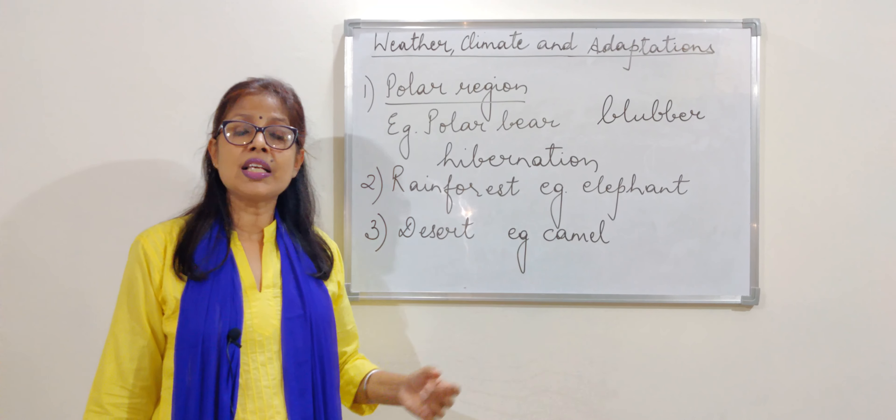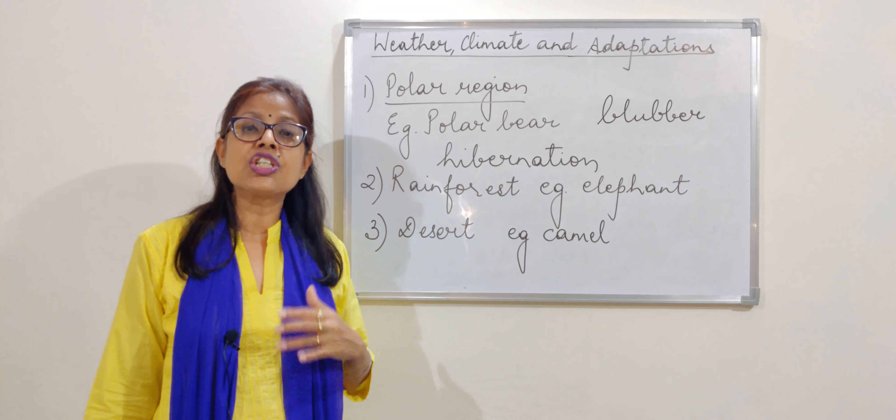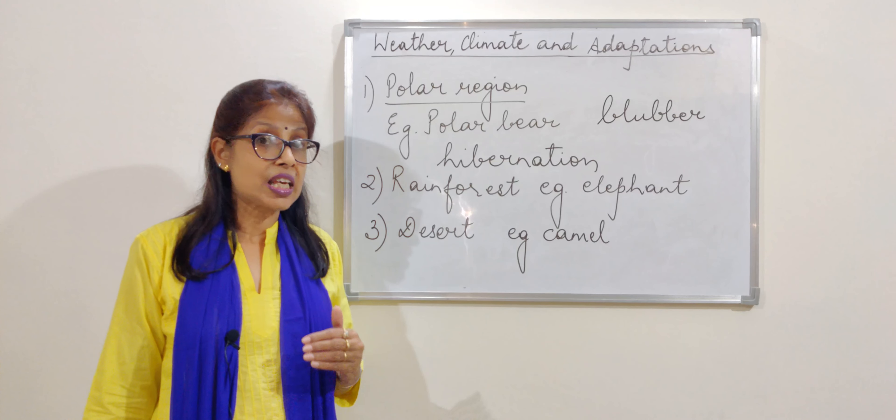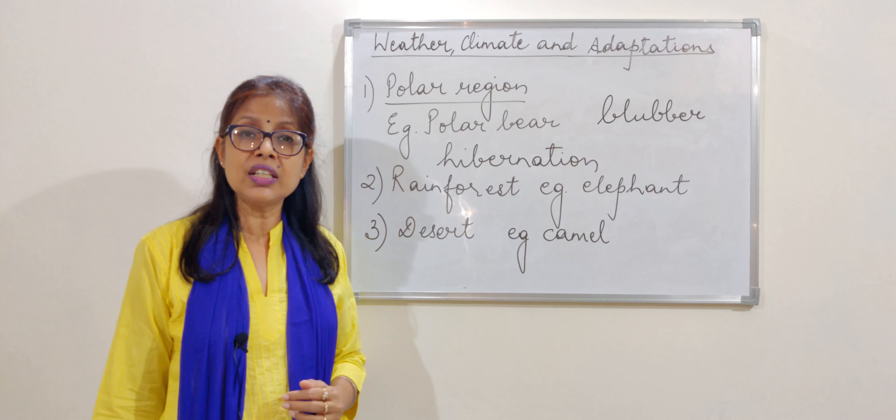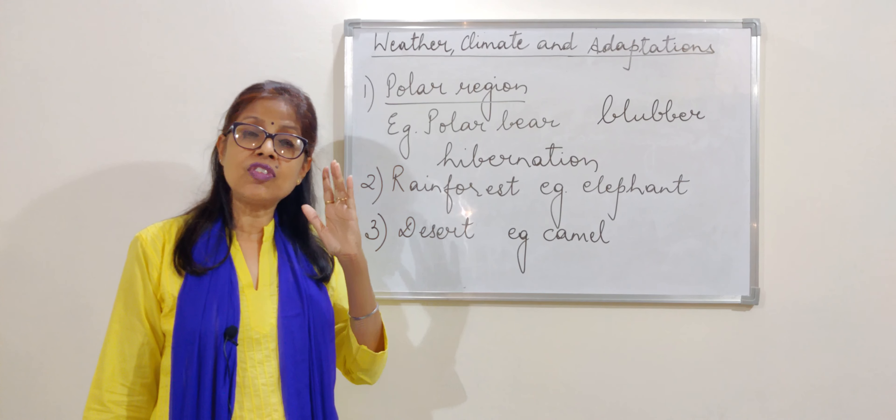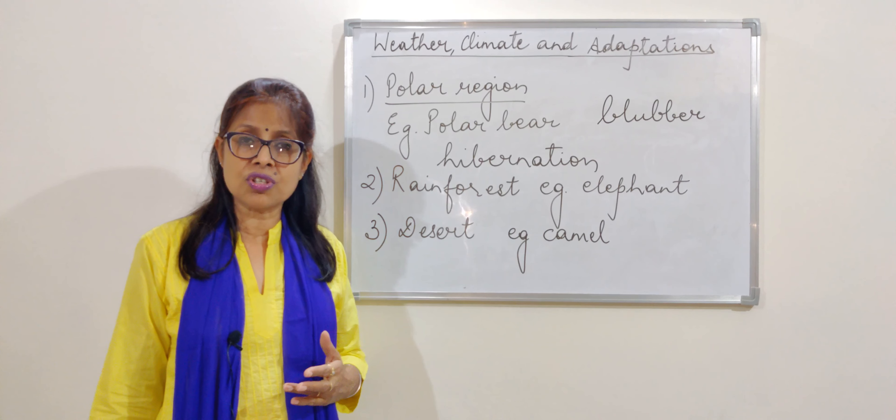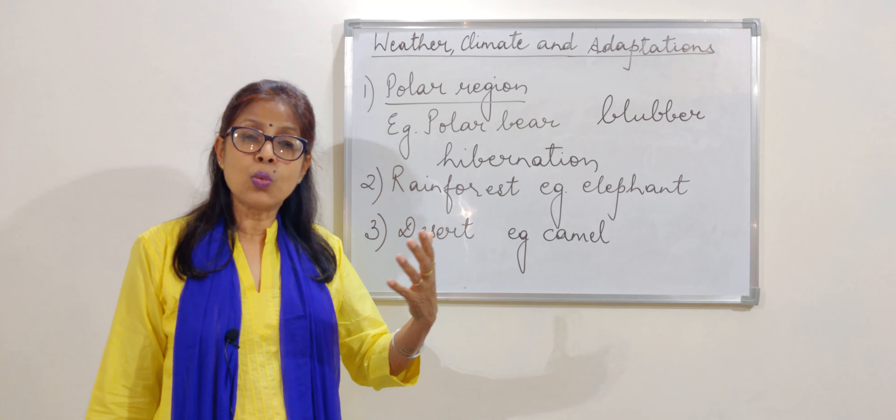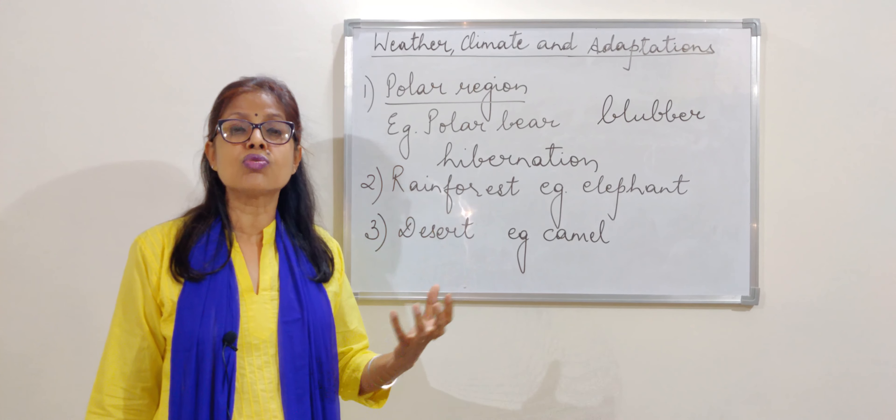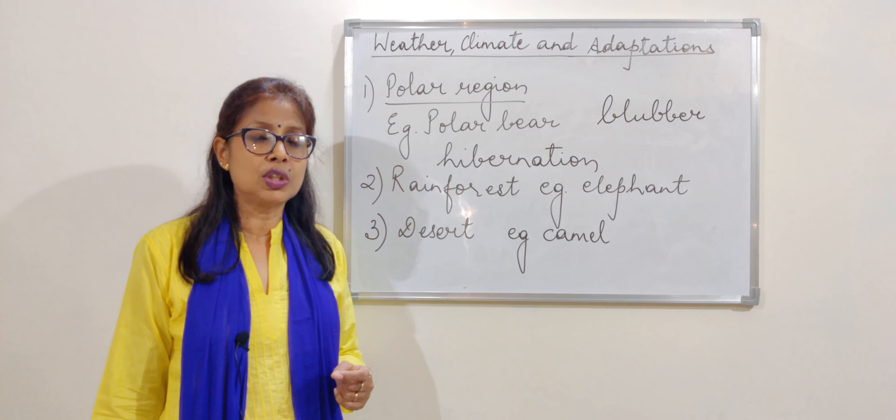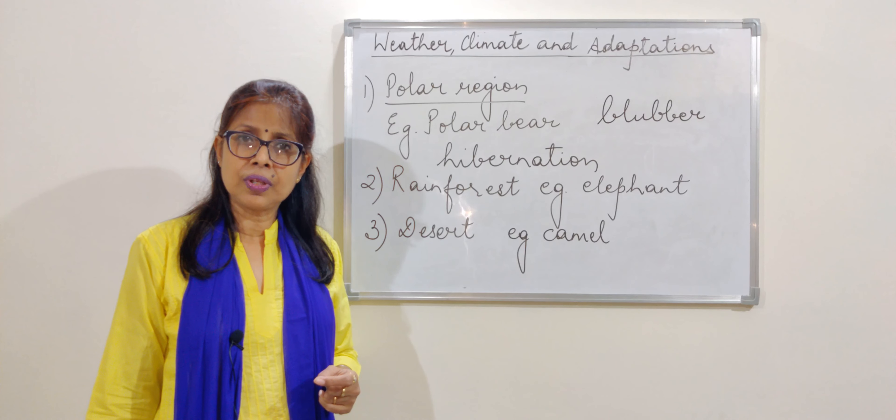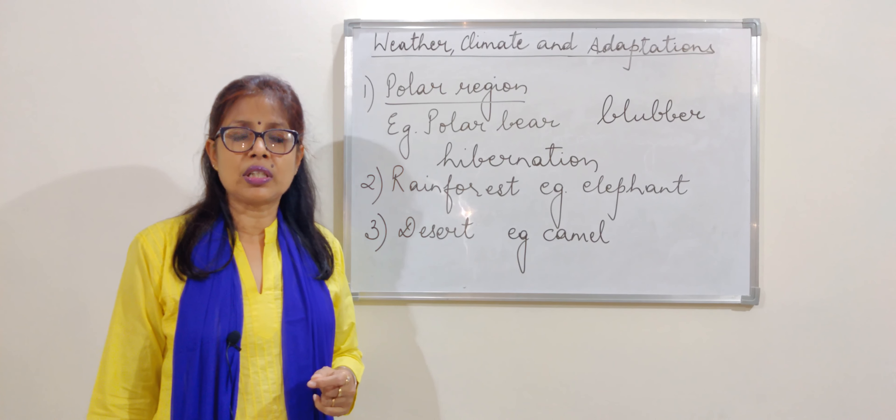And the camel has got many adaptations in its body structure. Like it can walk easily on the sand because it has got padded feet and it has got cover over its eyes and nostrils so that when the wind blows and the sand is also blown with the wind, it does not enter the eyes or the nose of the camel.